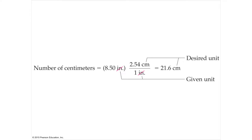Here's what it looks like stretched out. You're given inches and you want centimeters, so you keep working until you have centimeters — when you have centimeters, you're finished. In one inch there are 2.54 centimeters; inches cancel and you're now in centimeters. So 8.5 times 2.54 gives you your desired unit.